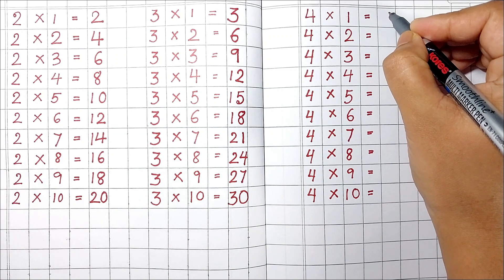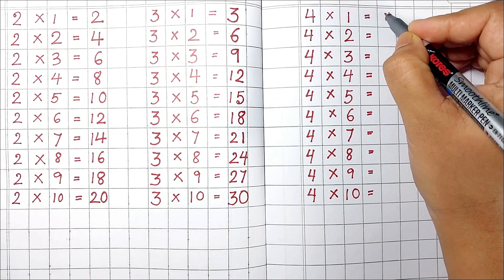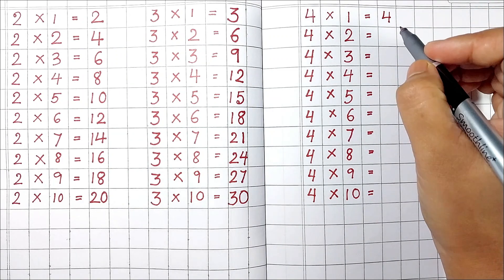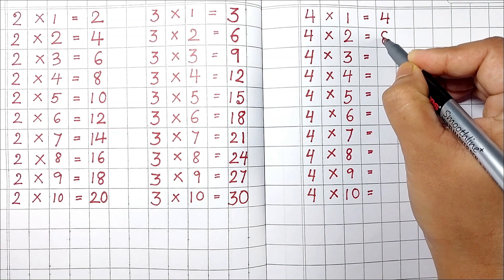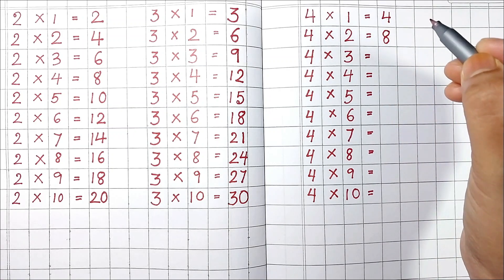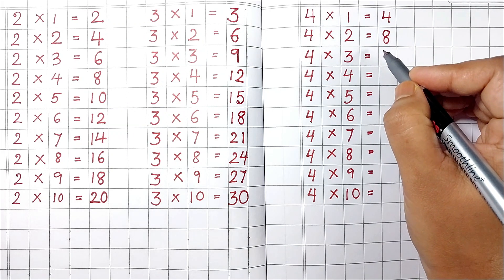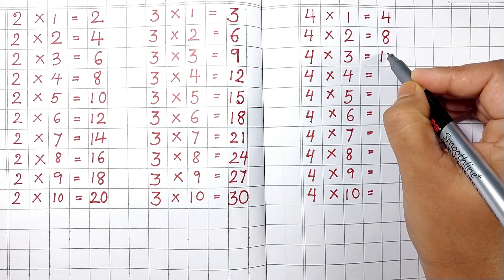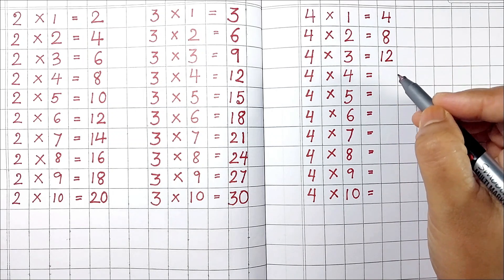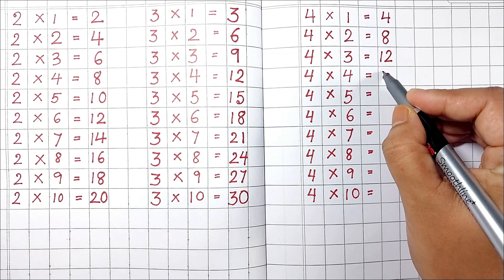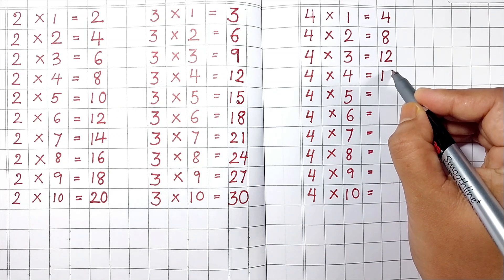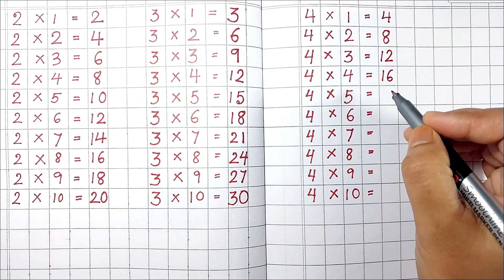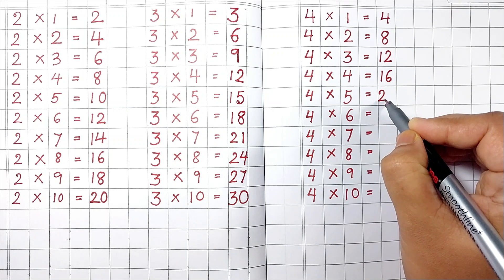4 1's are 4. 4 2's are 8. 4 3's are 12. 4 4's are 16. 4 5's are 20.